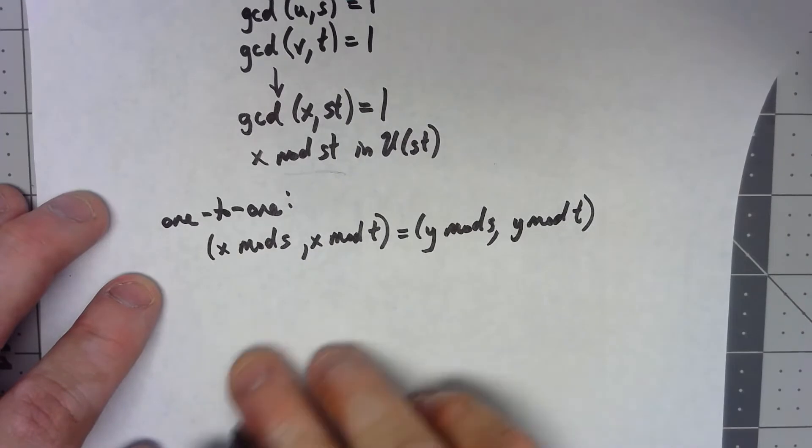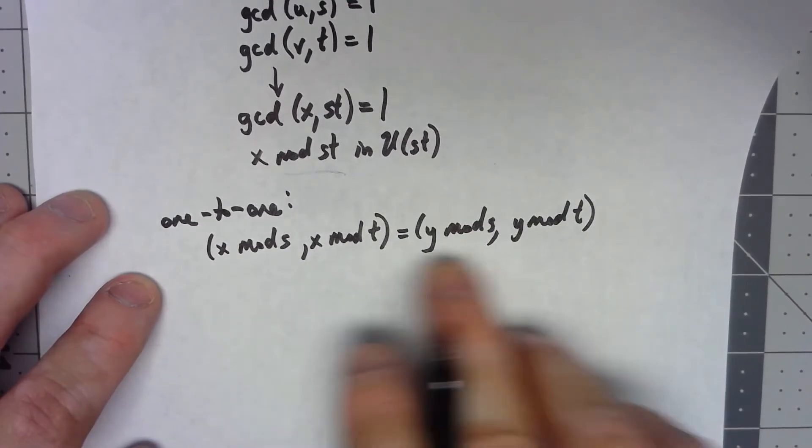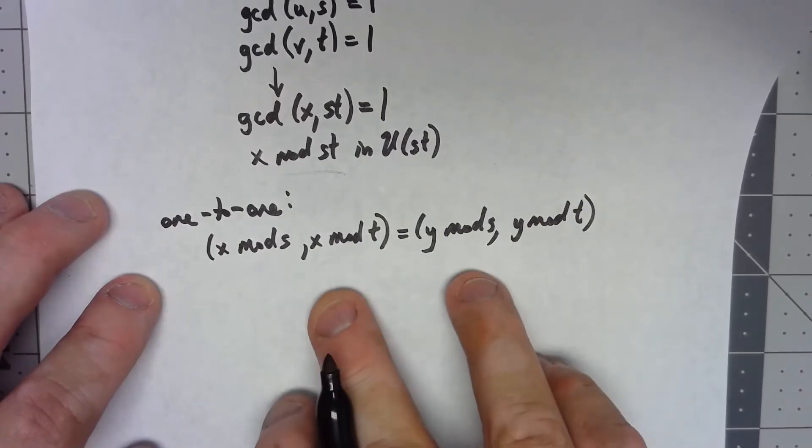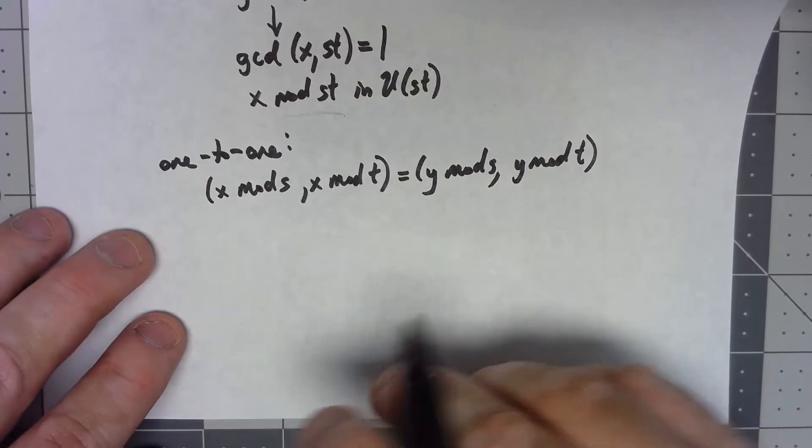Again, standard 1 to 1 thing. We're going to assume two function values are equal to each other and then show that they are actually the same thing.